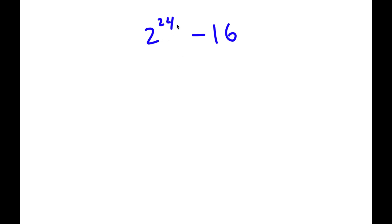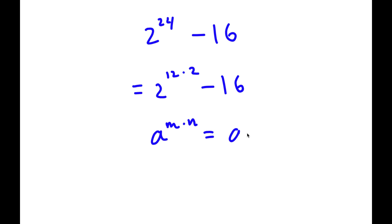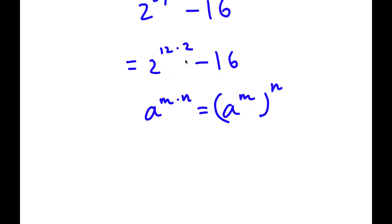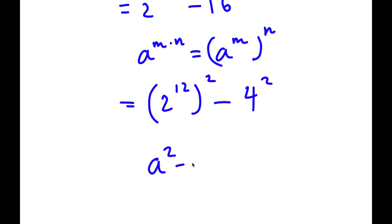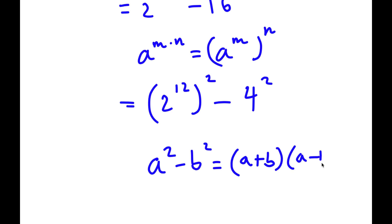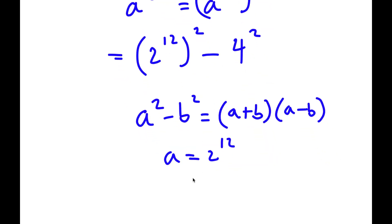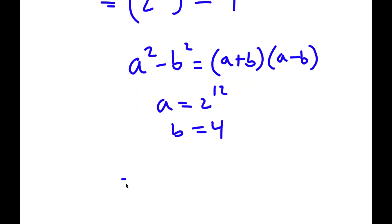In this problem, I have 2 to the power of 24 minus 16. To solve this, I'm going to first rewrite 2 to the power of 24 as 2 to the power of 12 times 2. Using the rule that a to the power of m times n equals a to the power of m to the power of n, I can write this as 2 to the power of 12 to the power of 2, and 16 I can rewrite as 4 to the power of 2. Now, using the difference of squares — a squared minus b squared equals a plus b times a minus b — with a equal to 2 to the power of 12 and b equal to 4, I have 2 to the power of 12 plus 4 times 2 to the power of 12 minus 4.